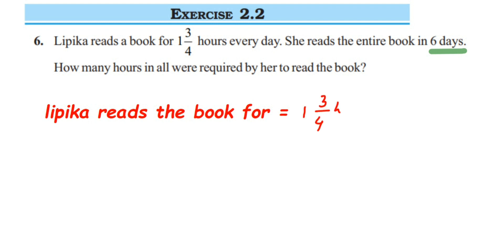This is a mixed fraction. We'll convert it to an improper fraction where the numerator is greater than the denominator. We multiply the denominator and whole number: 4 × 1 = 4. Then add the numerator: 4 + 3 = 7. So this equals 7/4 hours.